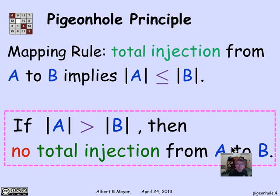One of the mapping rules is that if you have a total injection from a set A to a set B, that implies that the size of A is less than or equal to the size of B. And taking the contrapositive of that, it means that if the size of A is greater than the size of B, then no total injection from A to B is possible.